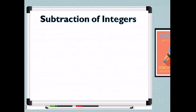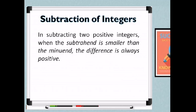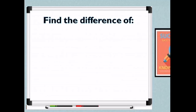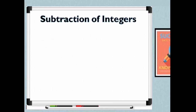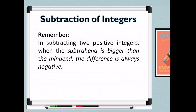Now let's move to subtraction of integers. When subtracting two positive integers where the subtrahend is smaller than the minuend, the difference is always positive. For example, find the difference of 6 from 10: 10 minus 6 equals 4. We just subtract, with the larger number in front, and the answer is positive.